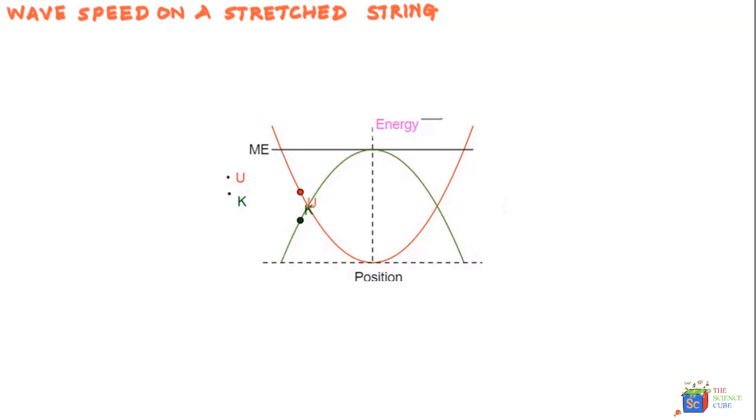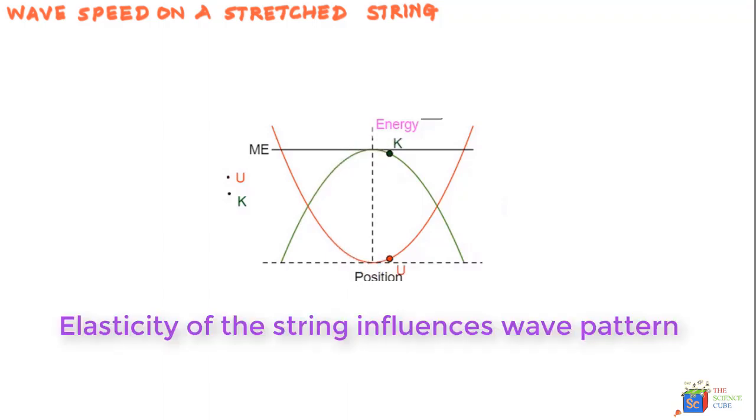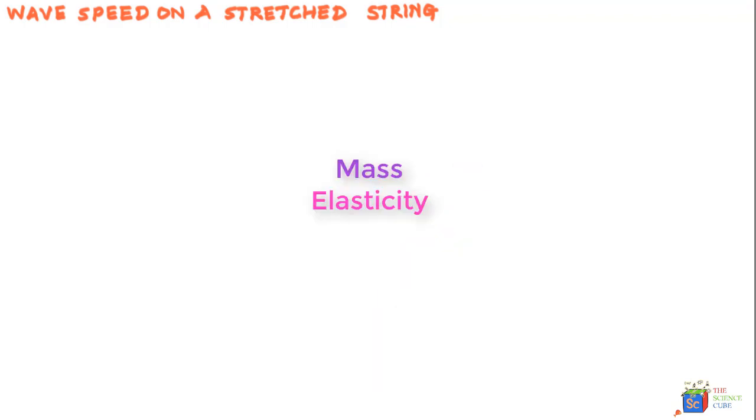The change in kinetic energy manifests itself as potential energy in the string, which means elasticity of the string is also a predictor of how the wave will behave. Indeed, mass and elasticity both determine how fast a wave will travel.